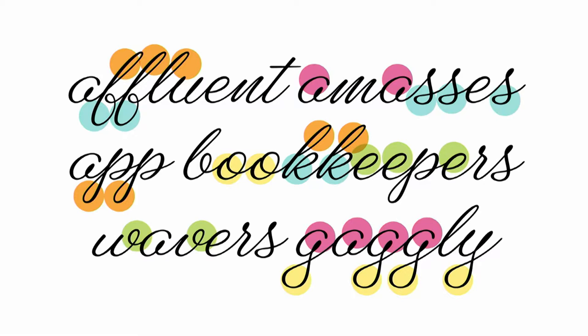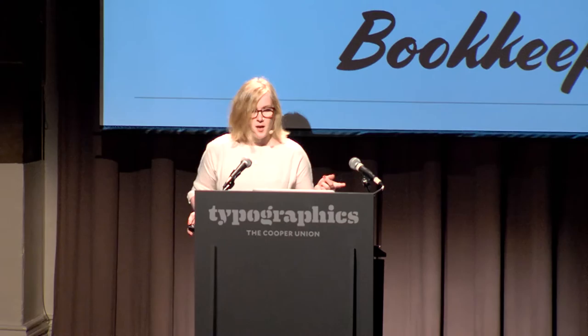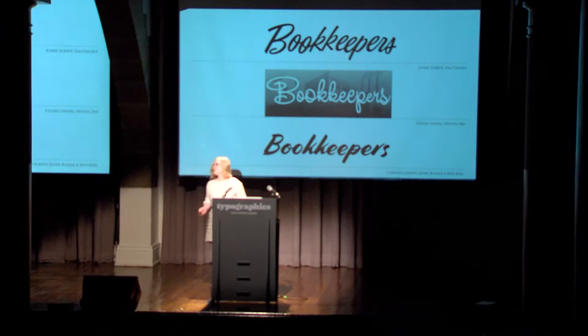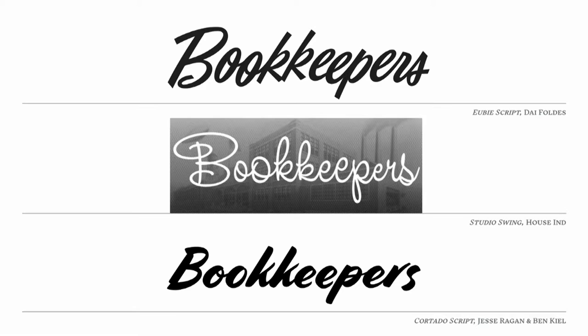Faced with this, we have two options. One: make a font that has a bunch of alternate characters to mimic real lettering. Lots of fonts do this really successfully — you know them, you love them — but they seem like a lot of work. It's obviously hard enough to get just one alphabet that looks good with itself, let alone try two or three or six. Or option two: tone it down.